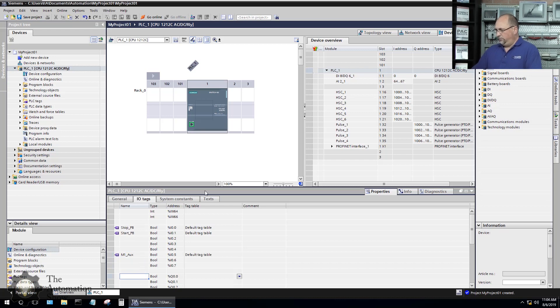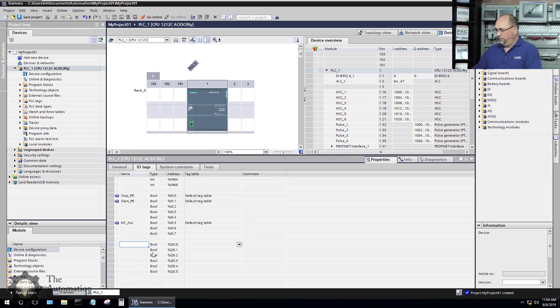All right, so now let's go ahead and do the outputs. I'm going to make this a little bit bigger here. So the first output will be my stopped pilot light. My second output will be a running pilot light. And last but not least, I have my M1 motor there at output number 5. OK, pretty easy so far, right?